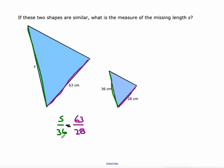So 28 times something equals 36. What if I do 36 divided by 28? That gives me, oh boy, a really ugly number. We can also do it this way.